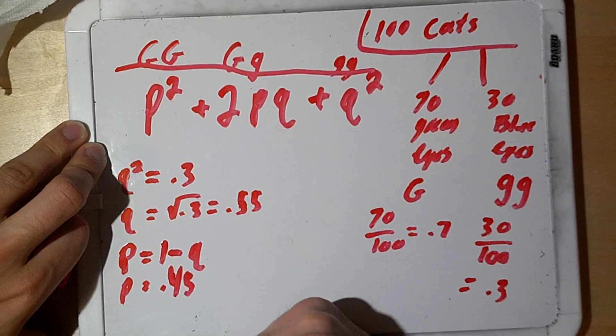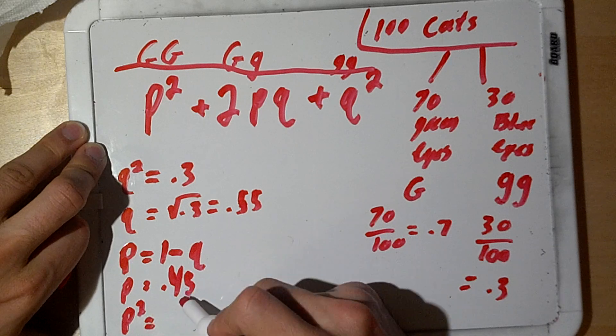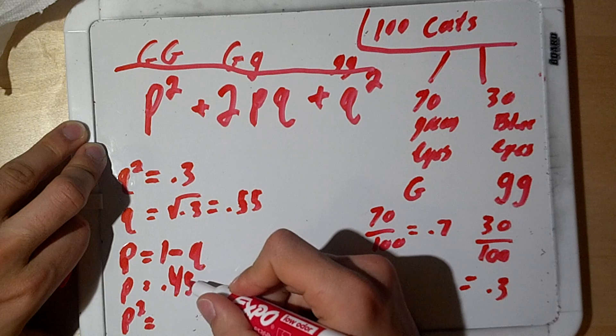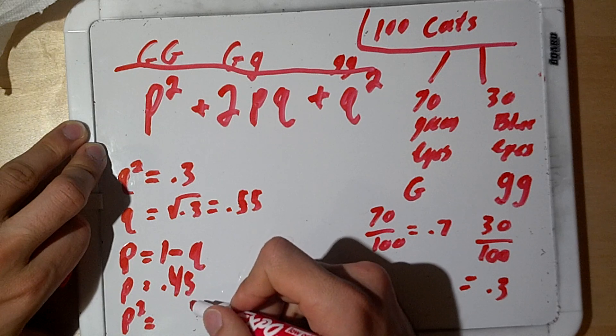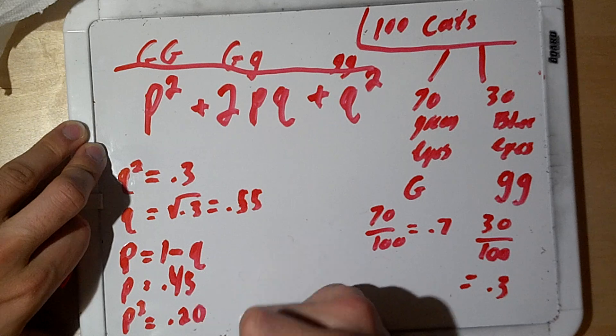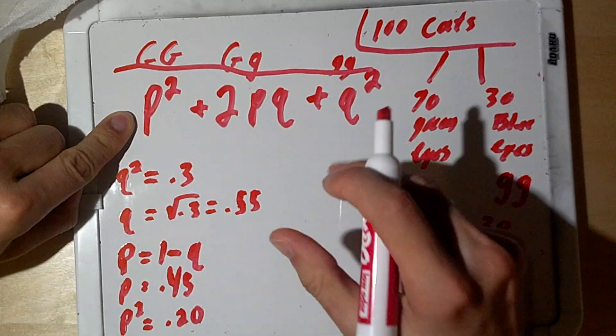Now, we have our p value. And from here, we can find p² by simply just squaring 0.45, essentially. And that would give us 0.20, roughly. And from here, we have our p². We have our q².